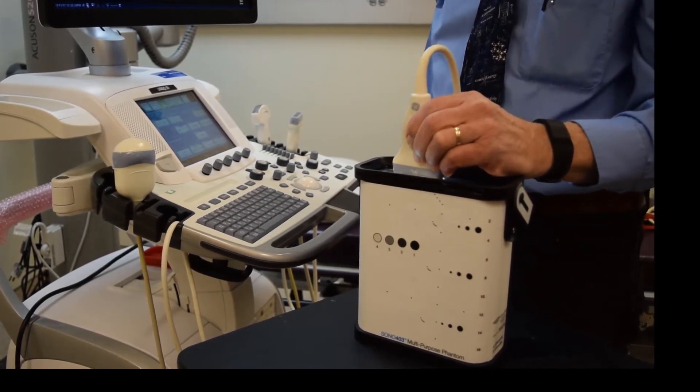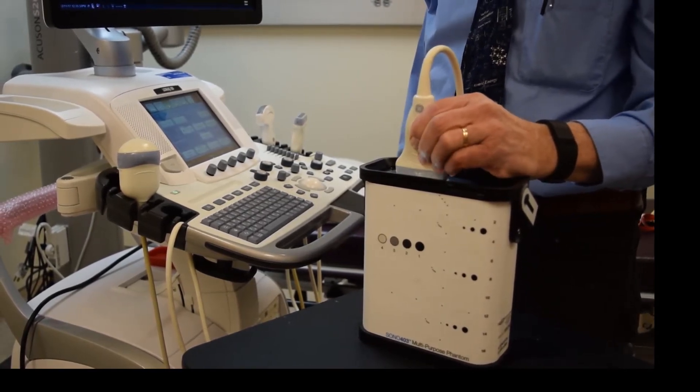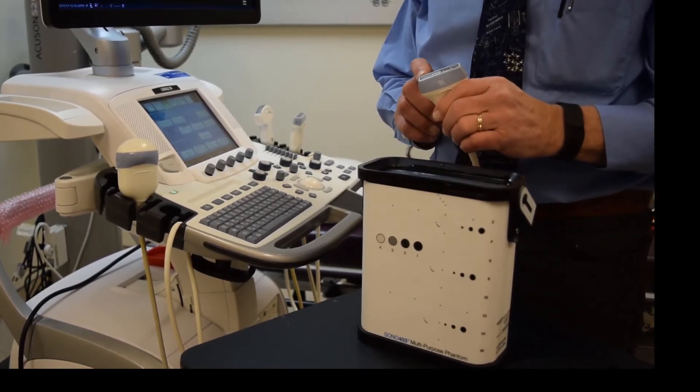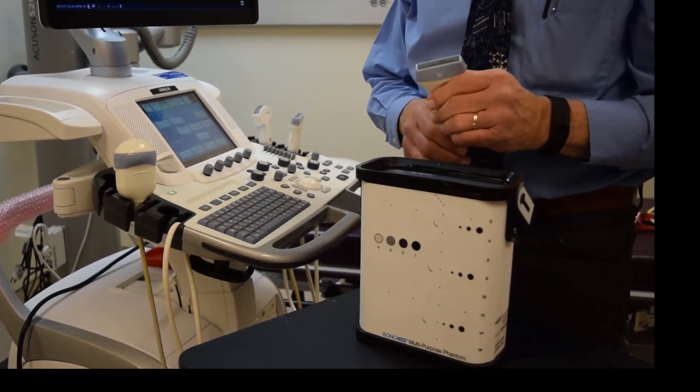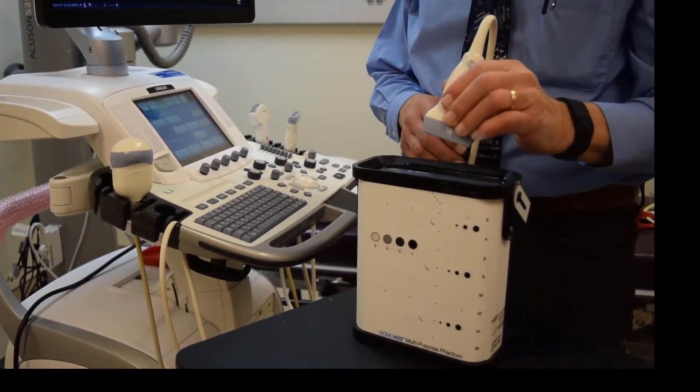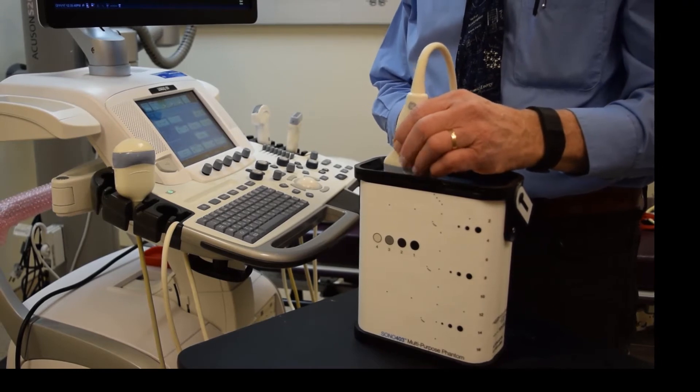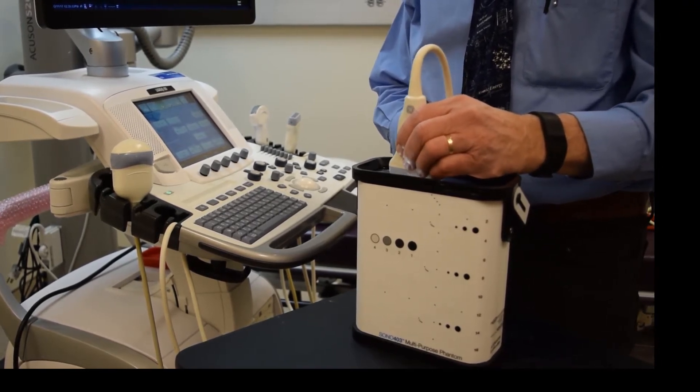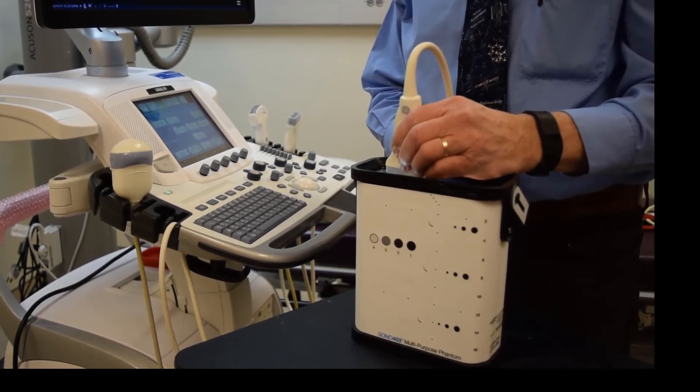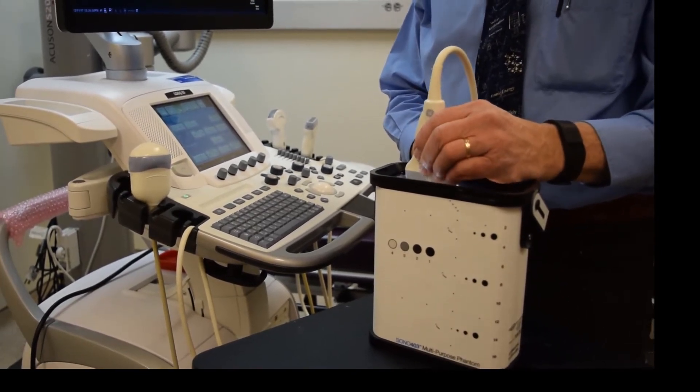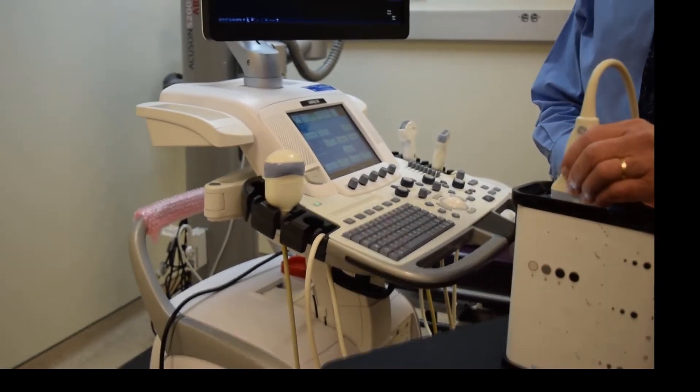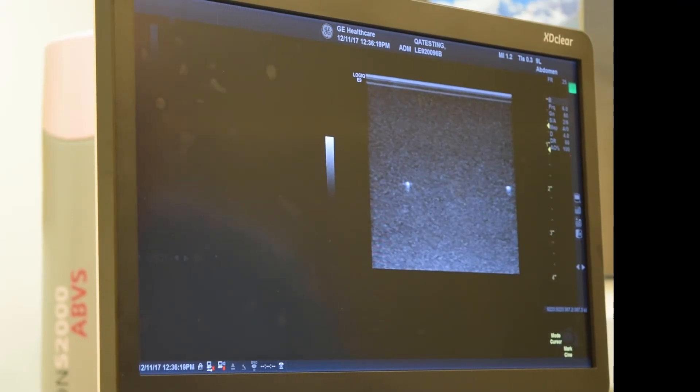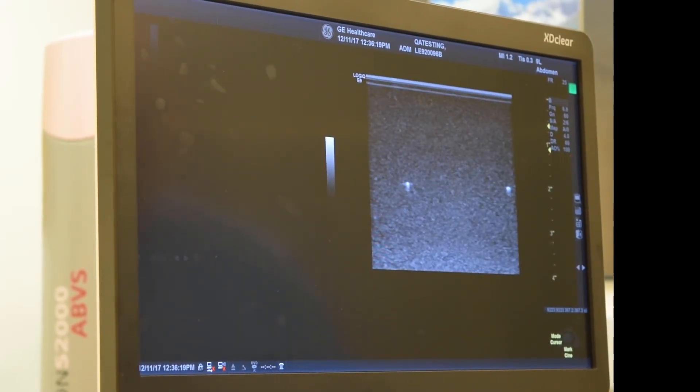We'll go through the ACR's annual survey tests that must be done for every machine and transducer used in an accredited ultrasound facility. The first is a test for image uniformity, and we'll demonstrate this using the L94 linear array transducer on our GE Logic E9 scanner. If the transducer is operating correctly, an image of a uniform phantom should yield a uniform image when you examine it up close to the transducer position.